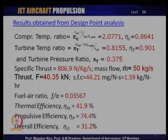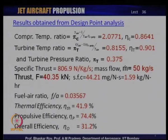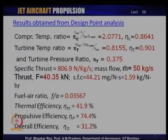The turbine temperature ratio, calculated using the prescribed polytropic efficiency of 0.9, comes out to be 0.8155, with a corresponding turbine isentropic efficiency of 0.901 — 90.1 percent. The turbine pressure ratio across the turbine driving the compressor is 0.375. Following the overall cycle analysis procedure, the specific thrust comes out to be approximately 806.9 N per kg/s.